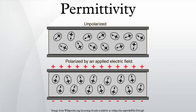The linear permittivity of a homogeneous material is usually given relative to that of free space, as a relative permittivity epsilon_r. In an anisotropic material, the relative permittivity may be a tensor, causing birefringence. The actual permittivity is then calculated by multiplying the relative permittivity by epsilon_0, where chi is the electric susceptibility of the material. The susceptibility is defined as the constant of proportionality relating an electric field E to the induced dielectric polarization density P. The susceptibility of a medium is related to its relative permittivity epsilon_r. The susceptibility is also related to the polarizability of individual particles in the medium by the Clausius-Mossotti relation.